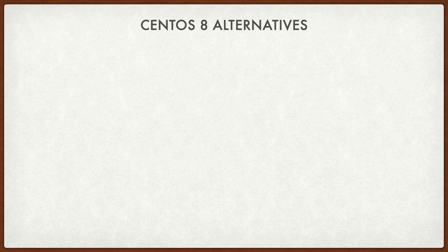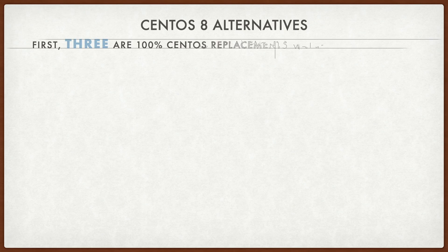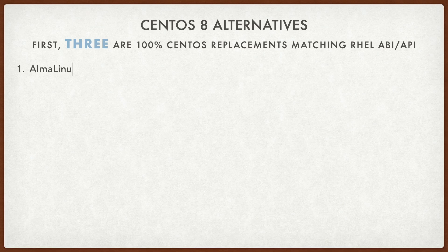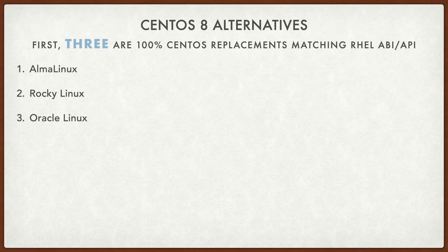So we have CentOS 8 alternatives. The first three in this list are 100% CentOS replacement matching RHEL ABI and API. That is Alma Linux, Rocky Linux, and Oracle Linux. These are 100% rebuilds of RHEL.